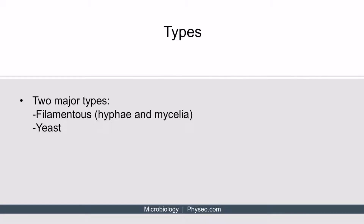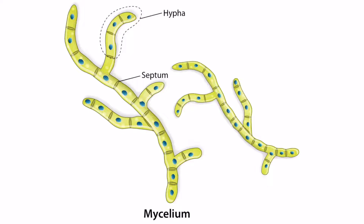There are two major types of fungi. The first type is referred to as filamentous and is comprised of small hyphae that collectively form a mycelium, and the other type is referred to as yeast. The small filamentous branches are referred to as hyphae, and collectively the network of hyphae is referred to as a mycelium. Cells are divided by septae — you can see a septum right here. However, not all fungi are this way; some mycelia have non-septate hyphae, and we'll discuss this in more detail as we introduce pathogens that exhibit this morphology.